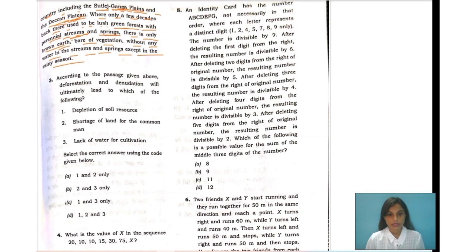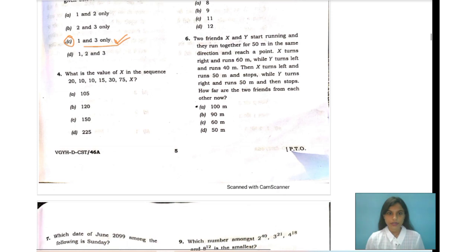Let's check the question. According to the passage given above, deforestation and denudation will ultimately lead to which of the following? Of course, depletion of soil resource is correct, shortage of land won't be going, and lack of water for cultivation is also correct. So one and three only, we are choosing. Number C is your correct answer.